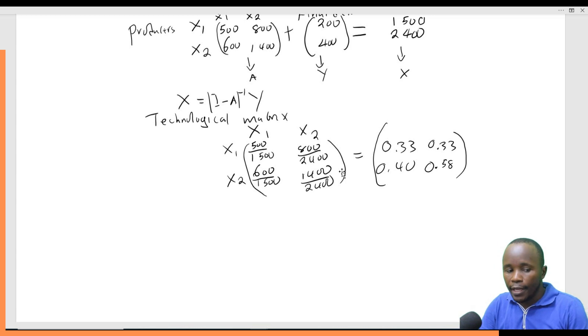From the information above, if I want to find X, it should be I minus A, which I have already given you as my new technological matrix, inverse Y. So I need to have I minus A, then inverse.